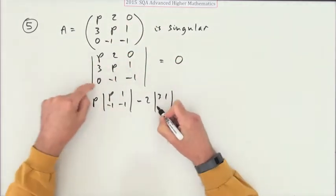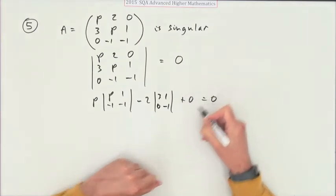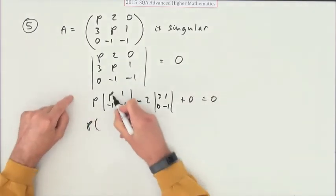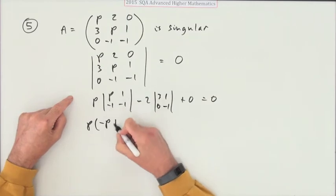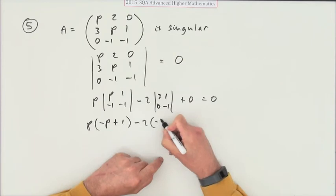So what is that? P times negative p minus negative 1 is plus 1, minus 2 times negative 3 minus 0 is negative 3, that equals 0. So negative p squared plus p plus 6 equals 0.